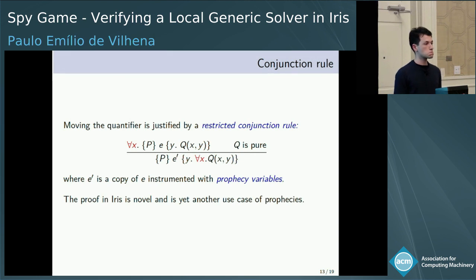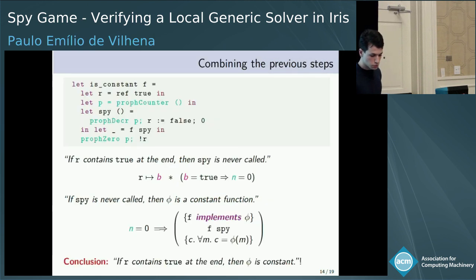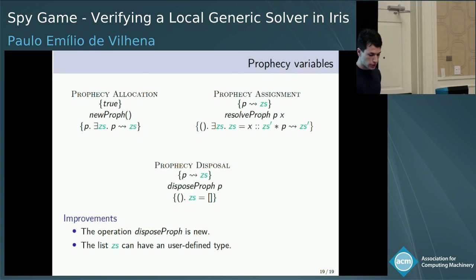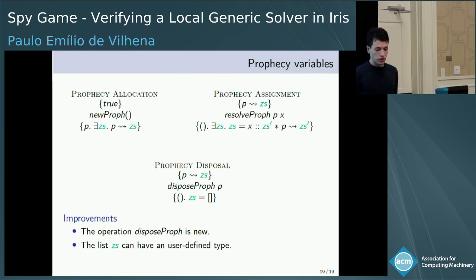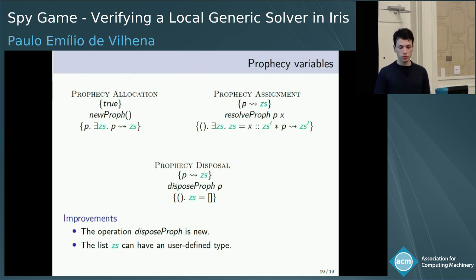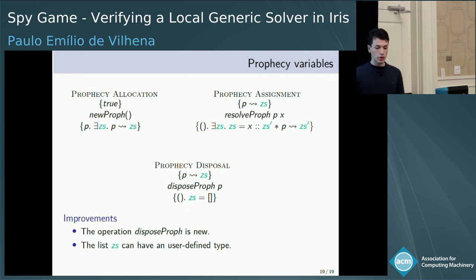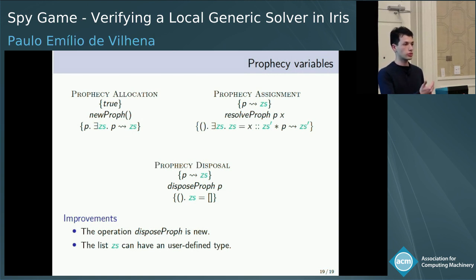You mentioned that you improved the prophecy variable API in Iris — I assume this is the work Rudolf talked about. Can you elaborate on the improvements and what the limitations were? As a disclaimer, it is not a major addition — it is a reworking built on top of the existing prophecy variables API.